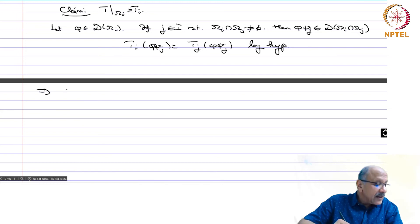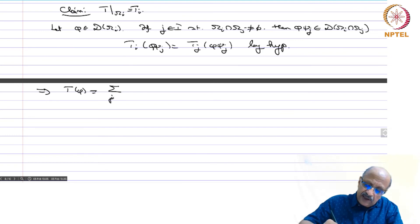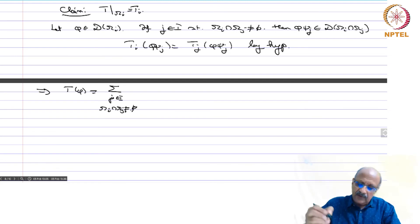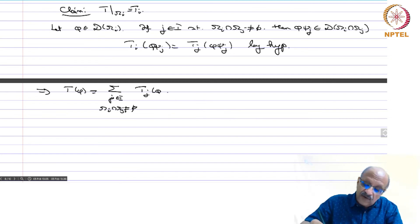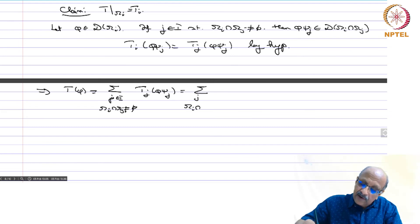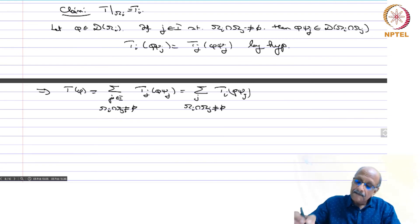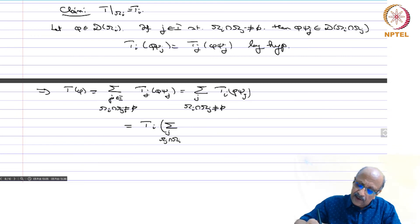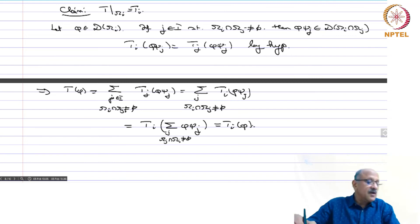This implies T(phi) = summation over j in I with omega_i ∩ omega_j non-empty of t_j(phi·psi_j), which equals summation of t_i(phi·psi_j) by what we just showed. That equals t_i acting on the sum over j with omega_j ∩ omega_i non-empty of phi·psi_j, and that equals t_i(phi) because psi_j is a partition of unity.